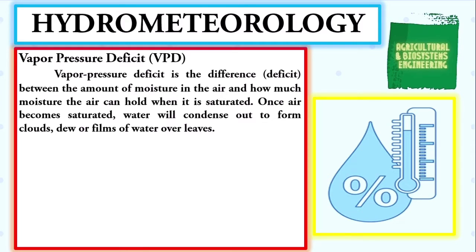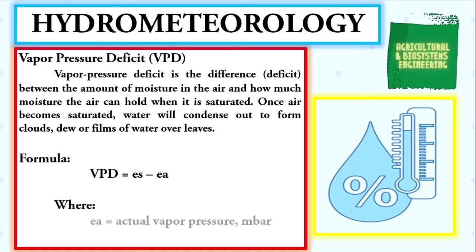Next, the vapor pressure deficit, represented by VPD. It is the difference between the amount of moisture in the air and how much moisture the air can hold when saturated. Once air becomes saturated, water will condense out to form clouds, dew, or films of water over leaves. The formula is: VPD = es − ea, where ea is the actual vapor pressure in millibars and es is the saturated pressure in millibars.